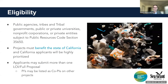Regarding eligibility, eligible applicants for this opportunity include public agencies, tribes, tribal governments, public or private universities, non-profit corporations, or private entities subject to Public Resources Code section 35650. PIs and collaborators outside the state of California are eligible but the projects must benefit the state of California, and California applicants will be highly prioritized. Applicants may submit more than one LOI or full proposal, and PIs can be listed as co-PIs on other projects — this will not be looked at negatively — but be sure that your time allotted to each makes sense and you're not overextending yourself.